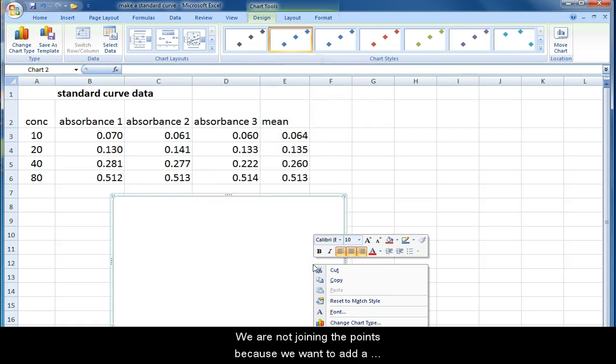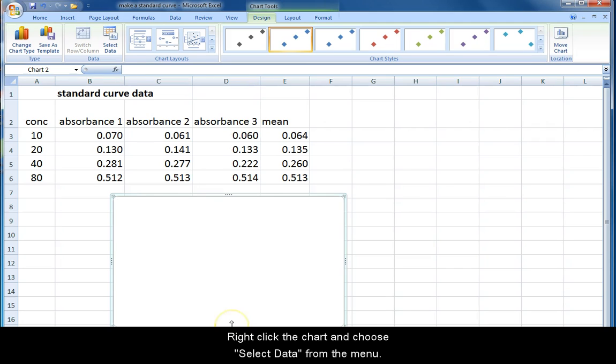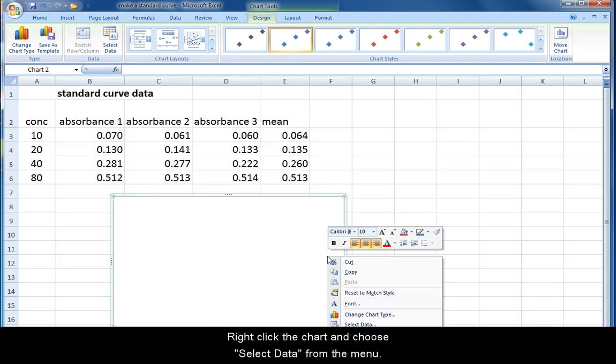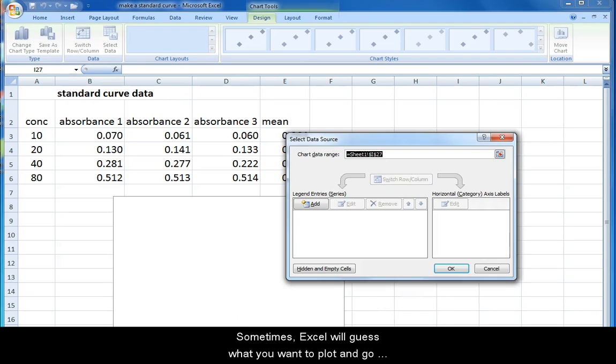We are not joining the points because we want to add a best fit line and joining the points now will make for a messy graph at the end. Right-click the chart and choose select data from the menu. Sometimes Excel will guess what you want to plot and go ahead and plot it. Usually it guesses wrong, but it is easy to remove Excel's guess by deleting anything that shows up in the chart data range.